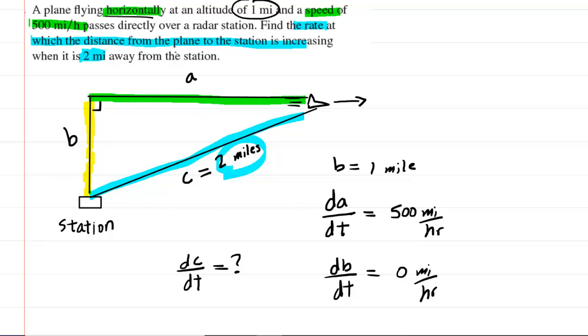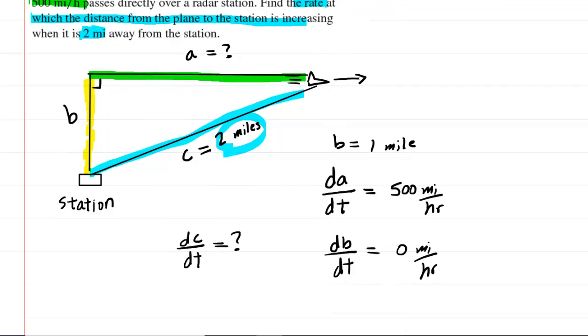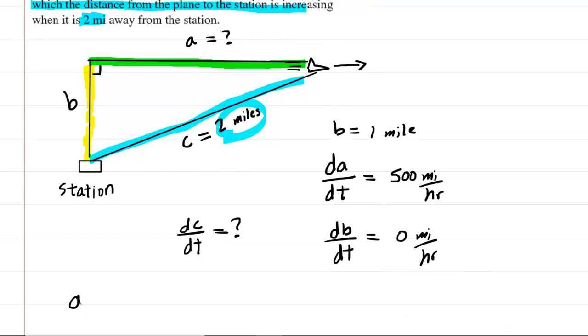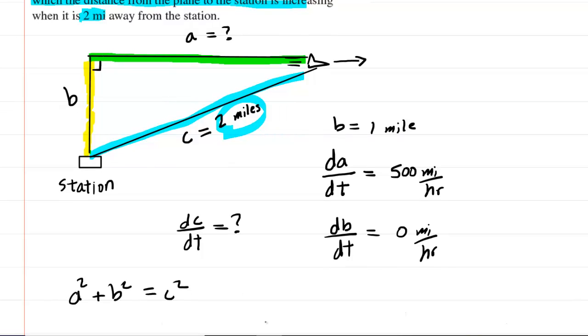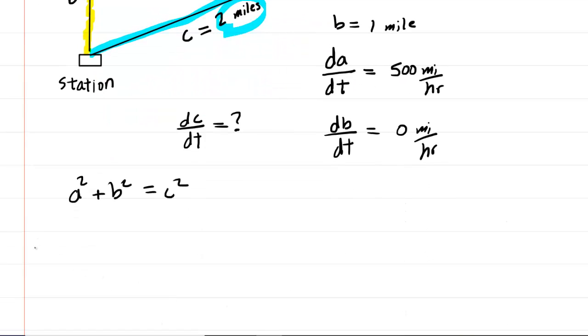The only missing piece of information we will need is the length of A. And we can obtain the length of A by using the Pythagorean theorem. So we know that A squared plus B squared equals C squared for any right triangle. We can fill in all the values that we have. So we have A squared plus 1 squared is equal to 2 squared.